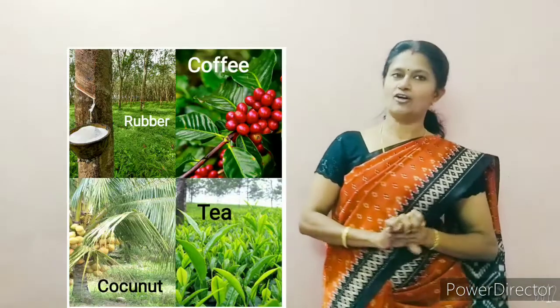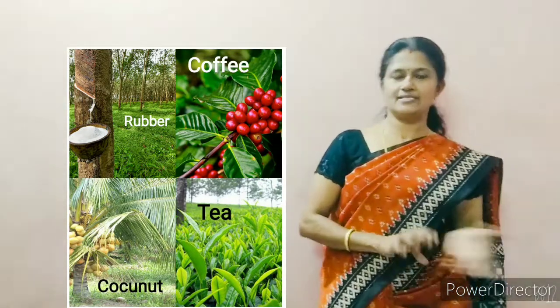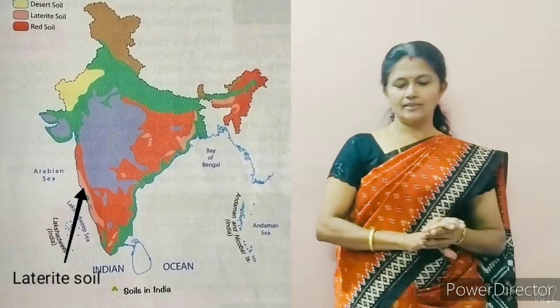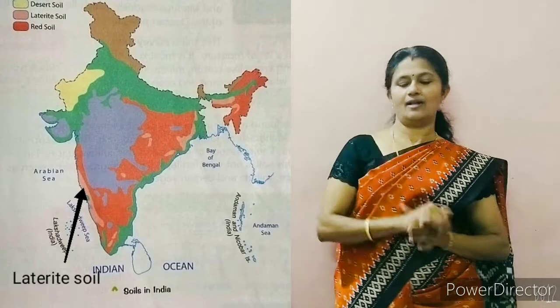In this soil, when farmers are growing crops, they add manure or fertilizers. This soil is good for cultivating coffee, tea, coconut etc. And it is mainly found in the regions of Odisha, Maharashtra, Karnataka, West Bengal, Meghalaya etc.